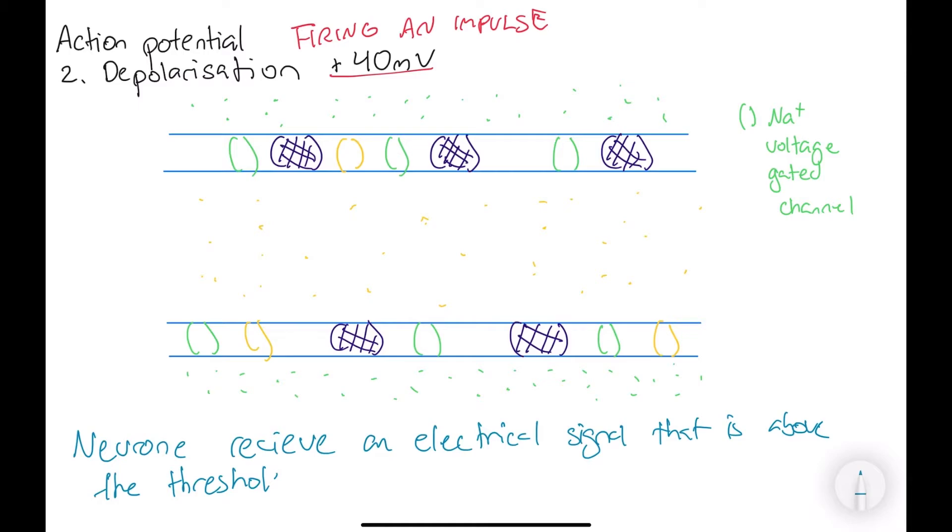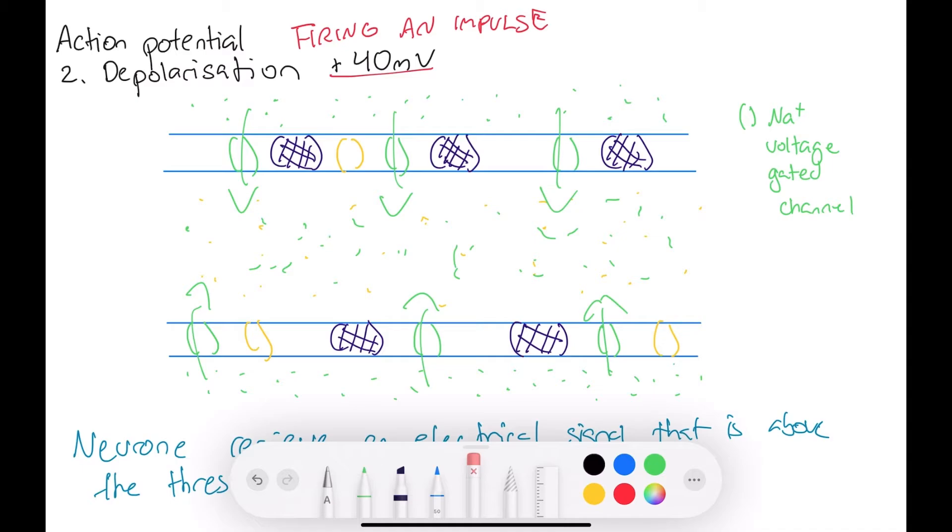So, once it is above the threshold potential, this means the sodium voltage gated channels will then open. And that means all of the sodium that's on the outside will flow into the axon. And suddenly, we'll have a lot more sodium on the inside, and a lot less on the outside. This means there are more positive ions on the inside, so the overall voltage is positive.